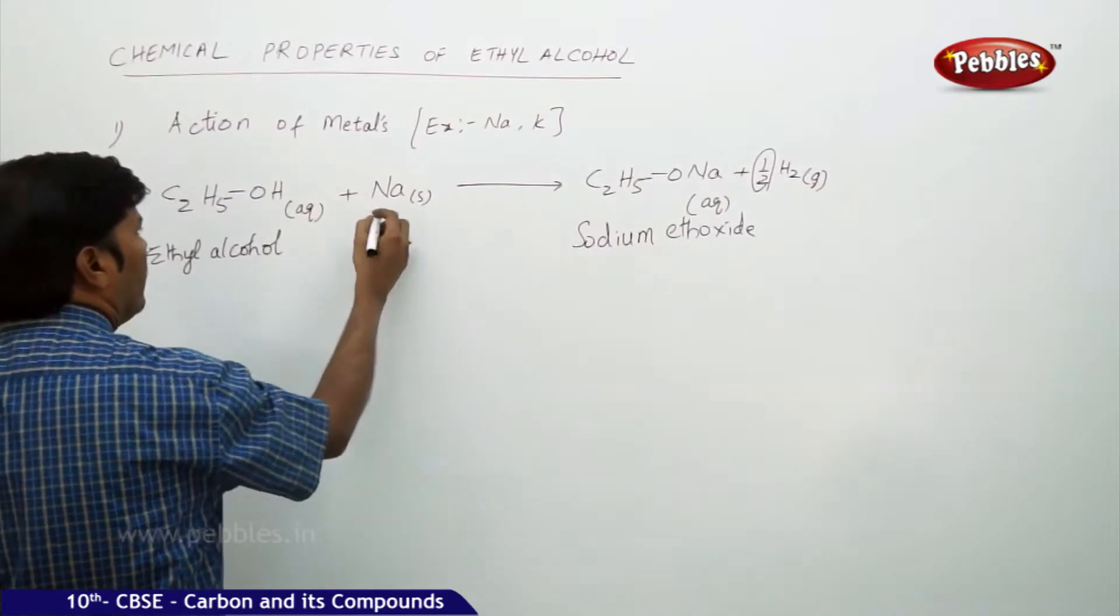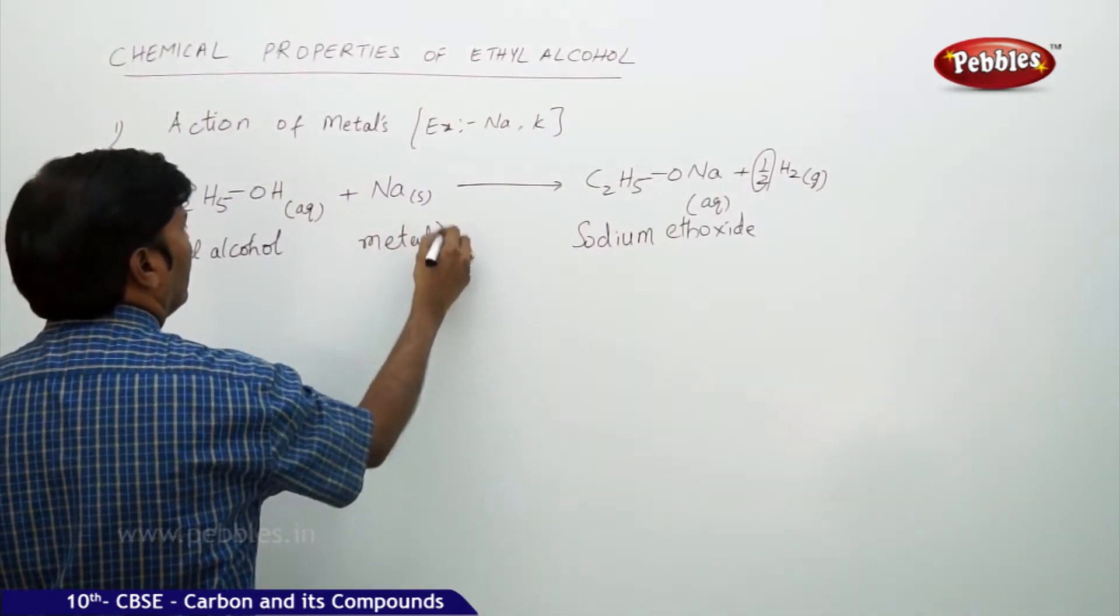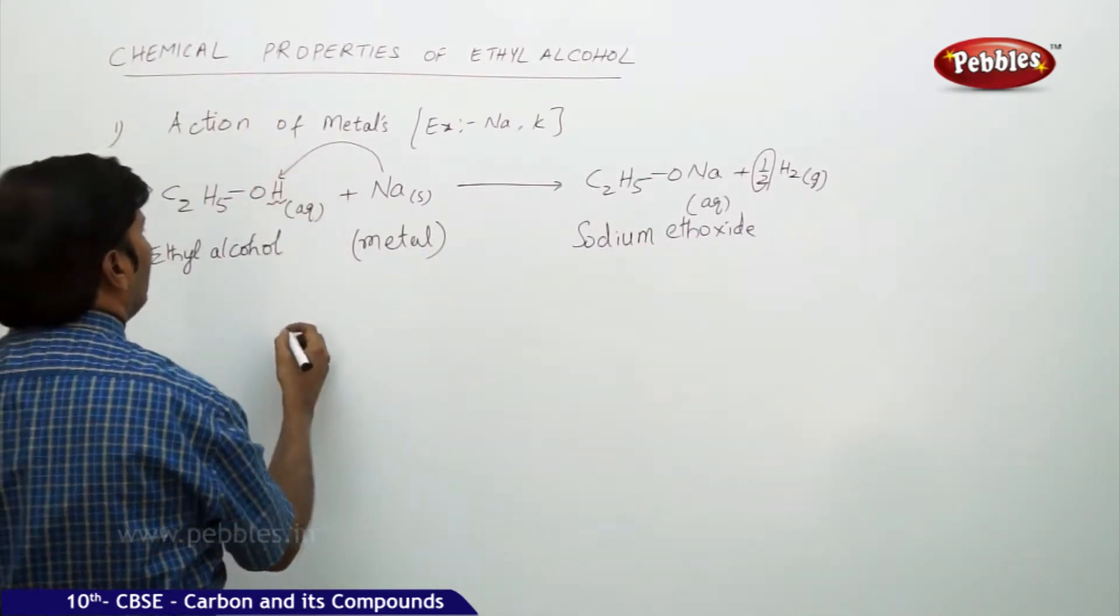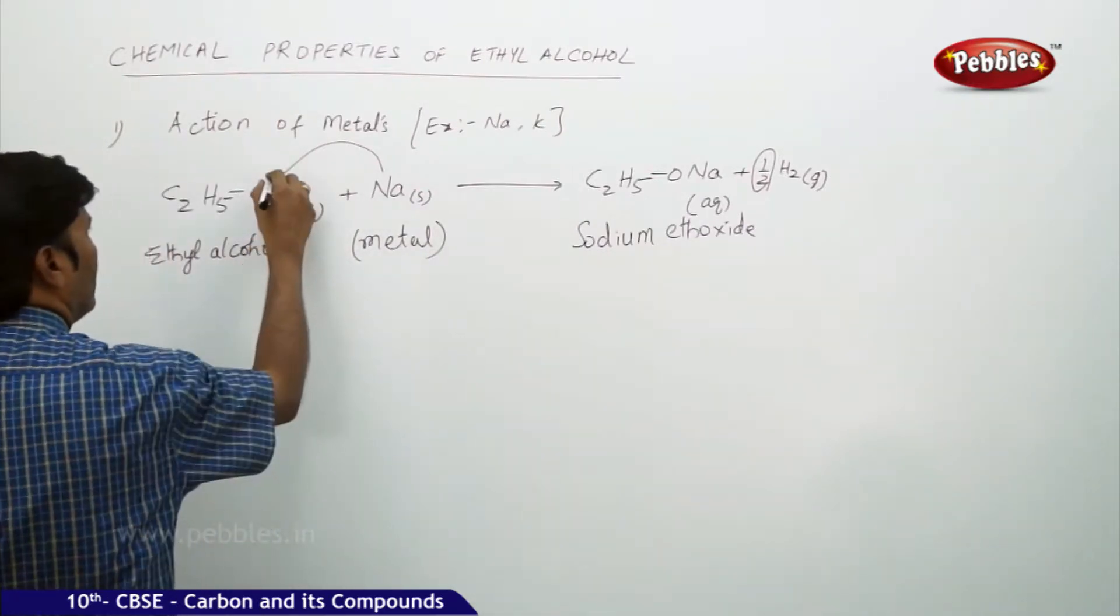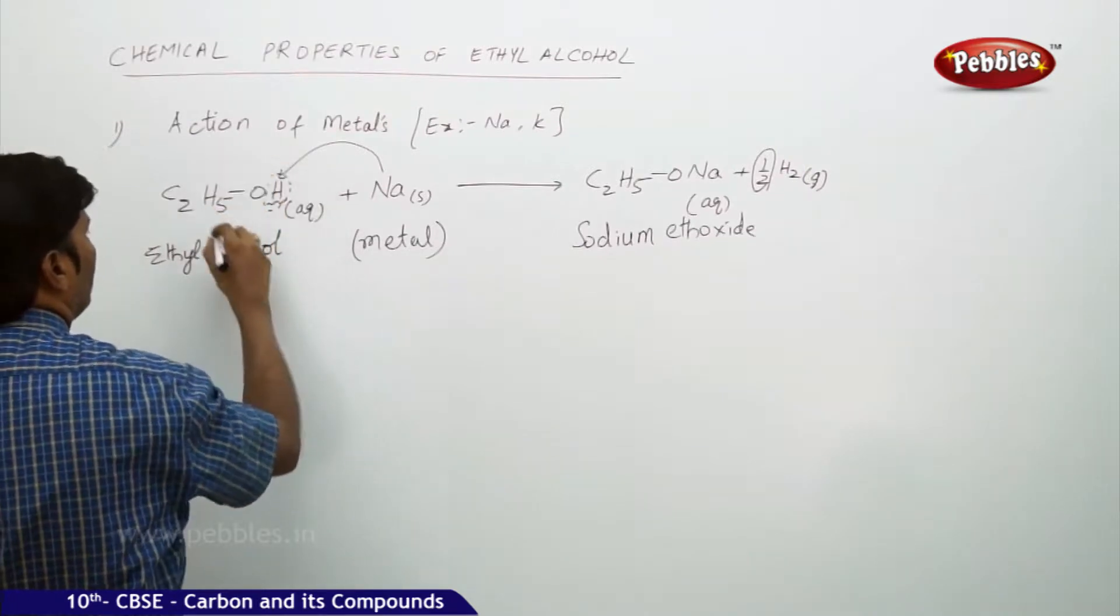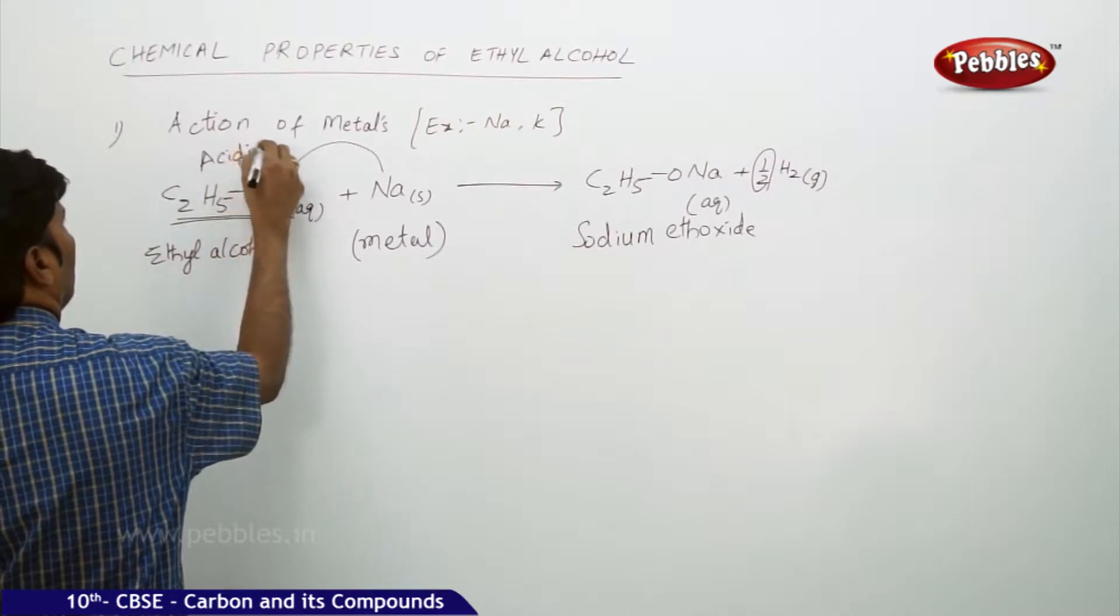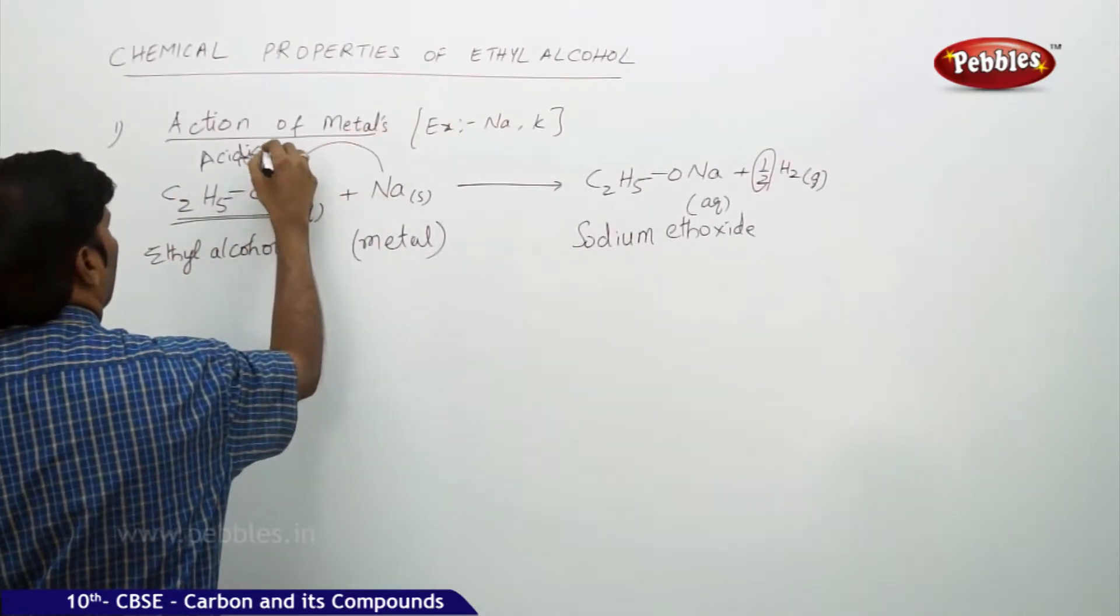That means whenever a metal, sodium metal, is acting on the ethyl alcohol, this hydrogen is called acidic hydrogen. This hydrogen which we see in ethyl alcohol, this is acidic hydrogen. Acidic hydrogen.